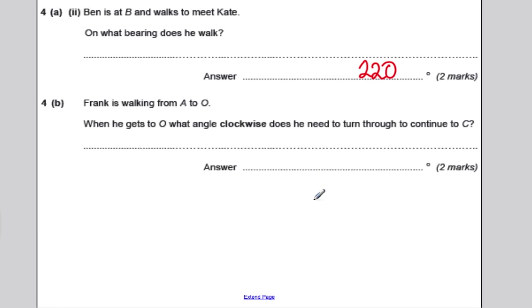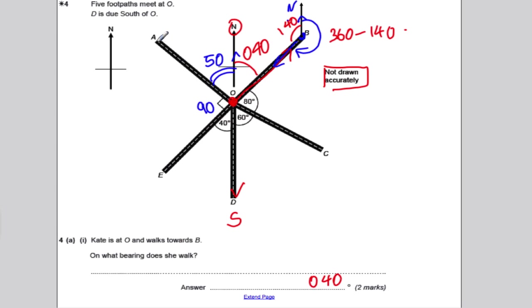The next one is a little bit trickier. Frank is walking from A to O. When he gets to O, what angle clockwise does he need to turn to continue to get to C? So he's walking from A over here to O. The first question we have to ask ourselves is what bearing is he going on? What is this angle here? Well, if we know that's 50, these two are interior. That must be 130. So his bearing is 130.